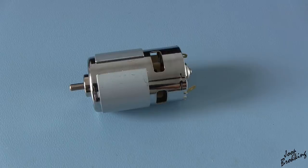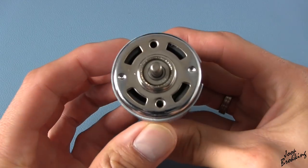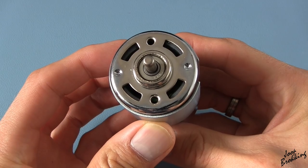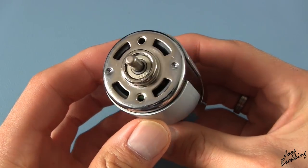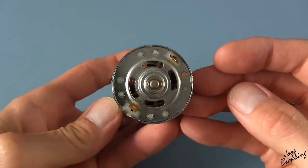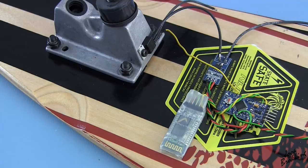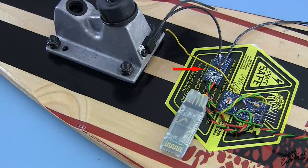DC motors draw a significant amount of current when the rotor is stalled. This motor will spike up to 24 amps. That's almost 600 watts when running on 24 volts. So without any protection, the motor windings will burn in seconds. To prevent this from happening,